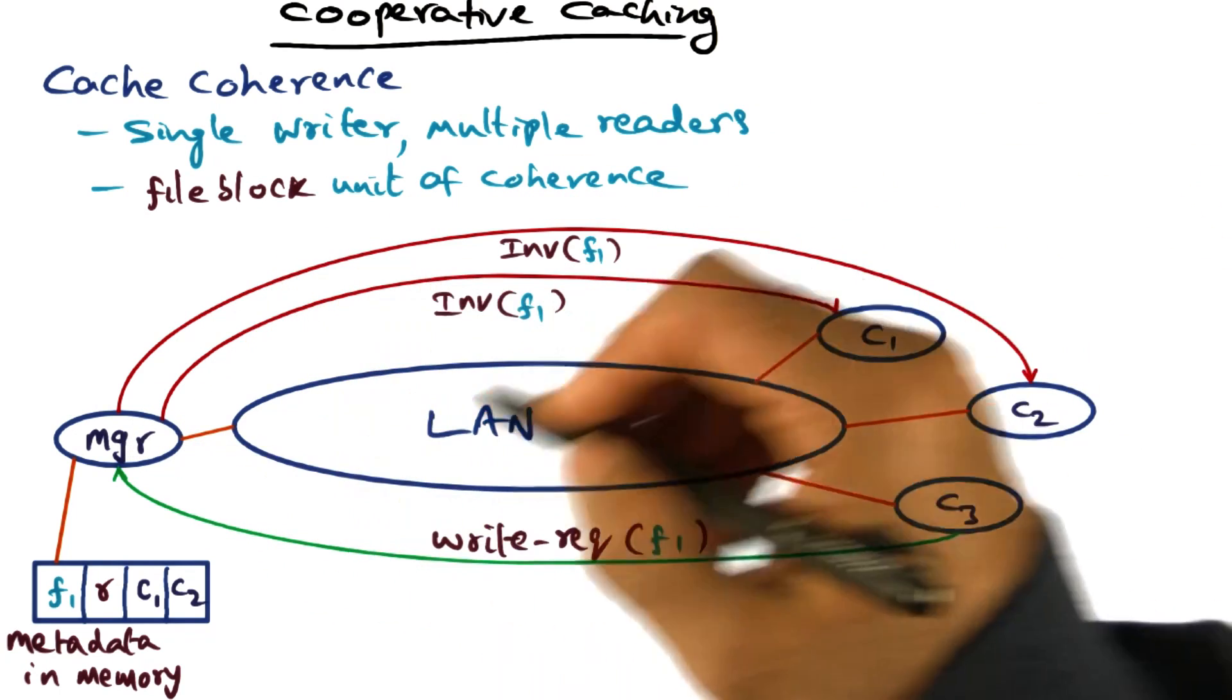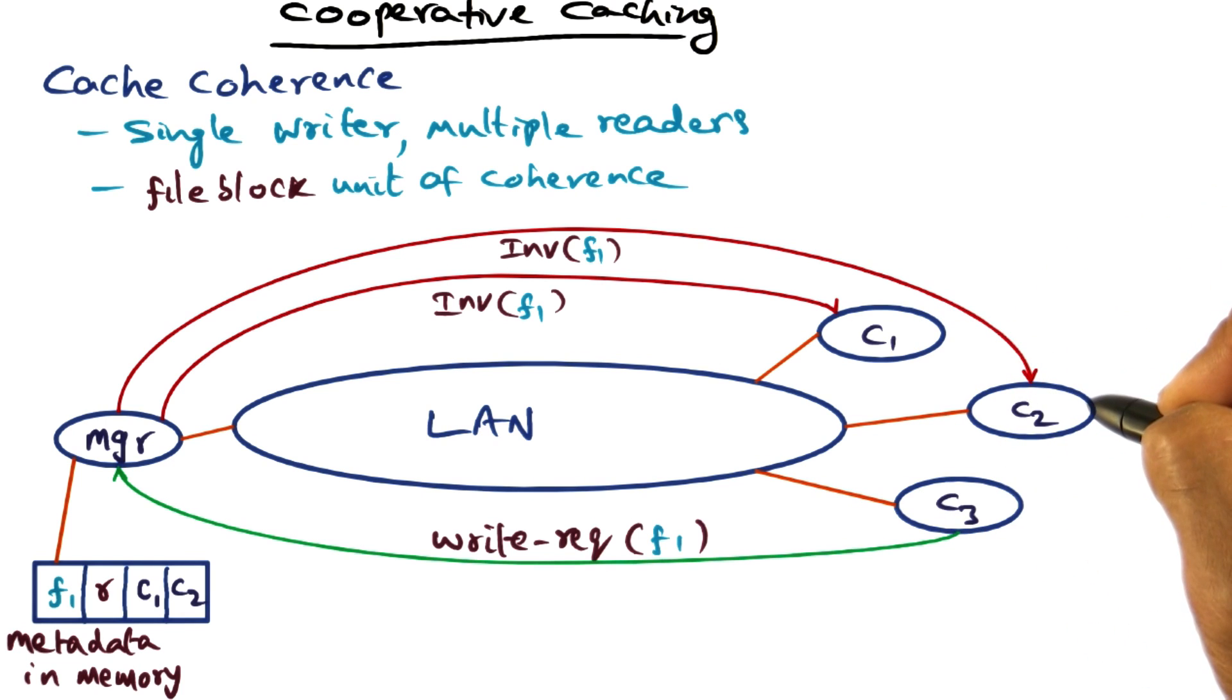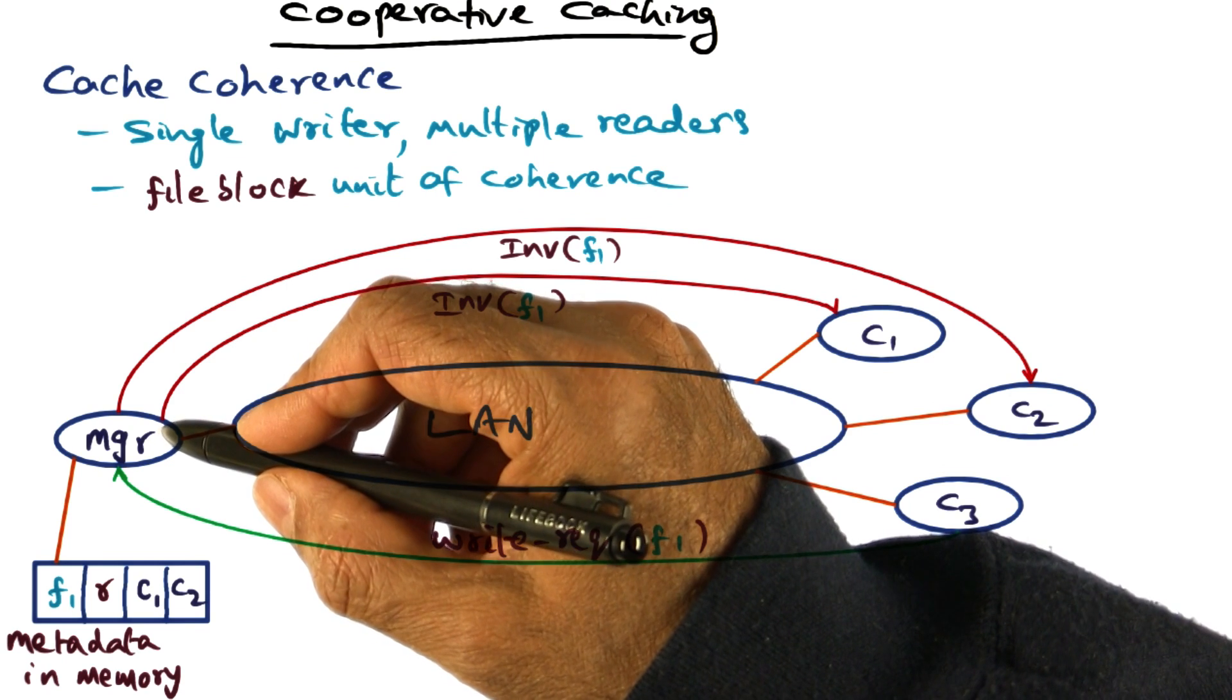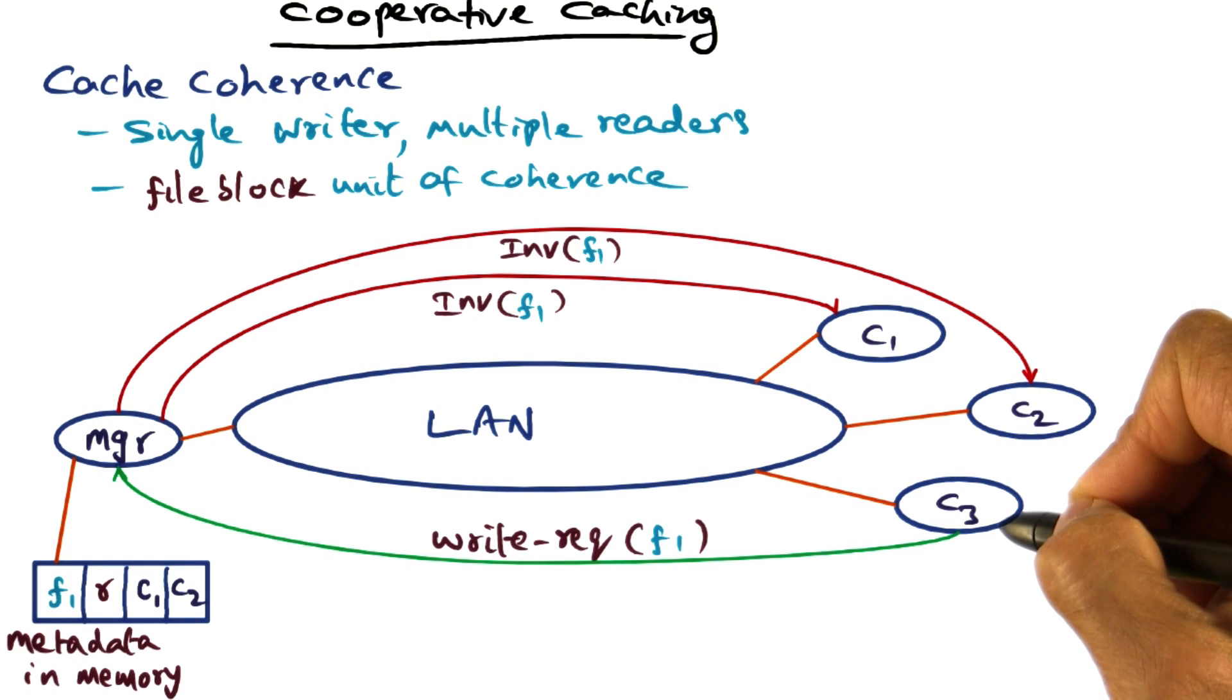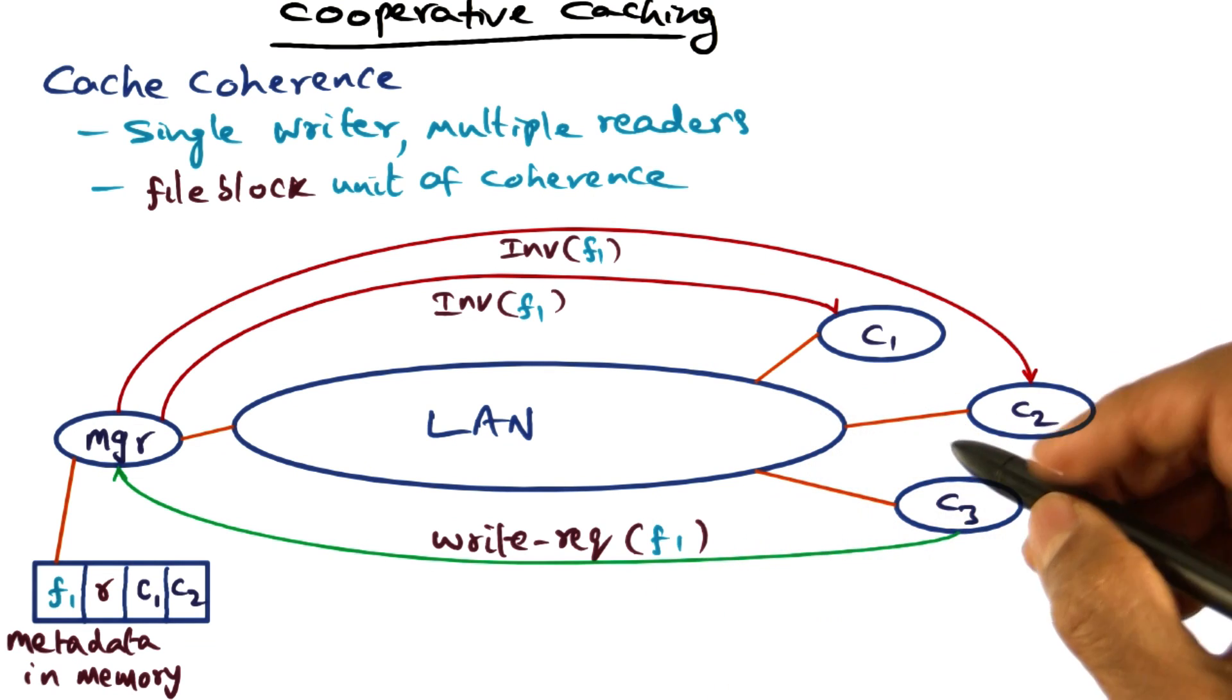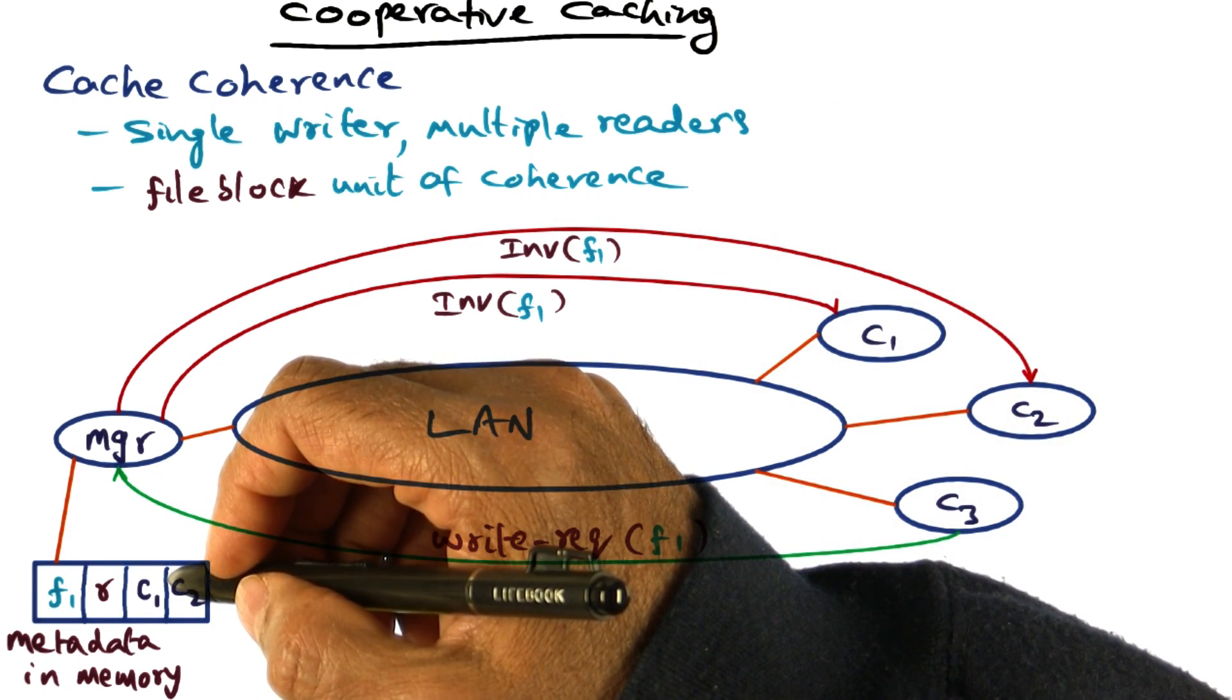And they're going to acknowledge to the manager saying that yes, we have invalidated our local copies of the files. And once the manager gets that indication back from the clients, at that point the manager can tell the client C3 that, okay, now you've got dibs on writing to this file. That's the protocol that is being observed in XFS to keep the copies of the files consistent.